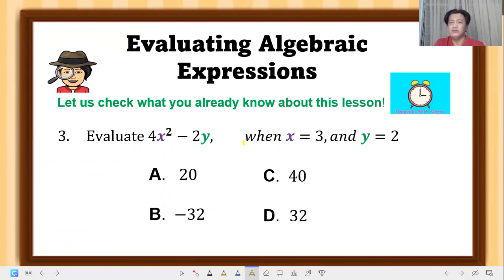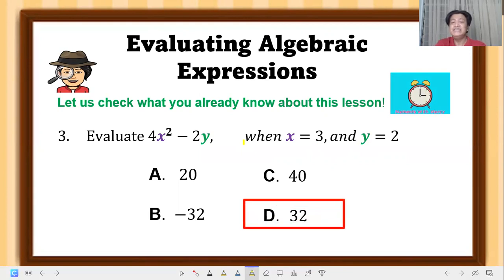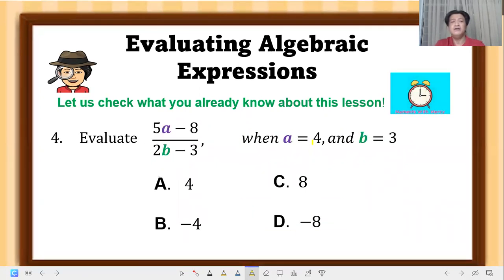Number 3: evaluate 4x squared minus 2y when x equals 3 and y equals 2. The correct answer is letter D, which is 32. Substituting: 4 times 3 squared — 3 squared is 9, times 4 is 36. Then 2 times 2 equals 4, so 36 minus 4 equals 32.